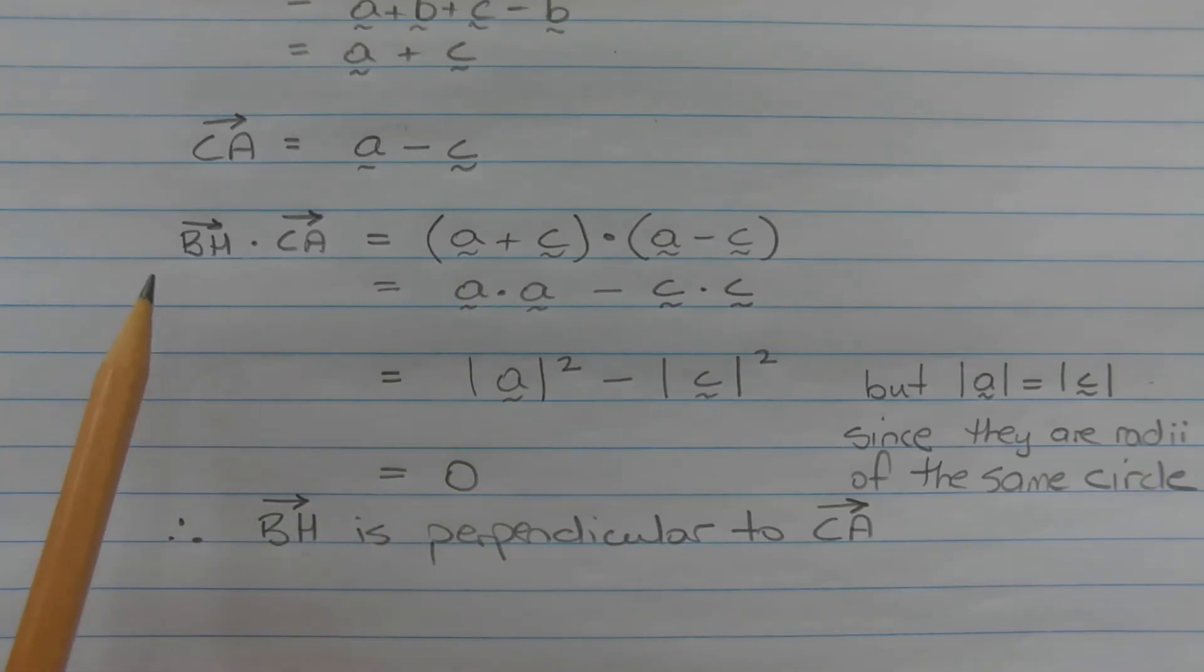Therefore the dot product of BH and CA is equal to zero. Therefore vector BH is perpendicular to vector CA.